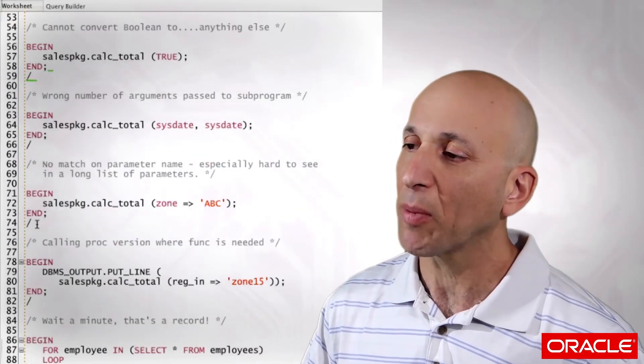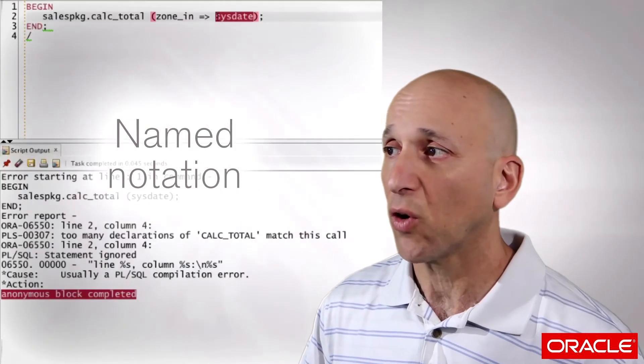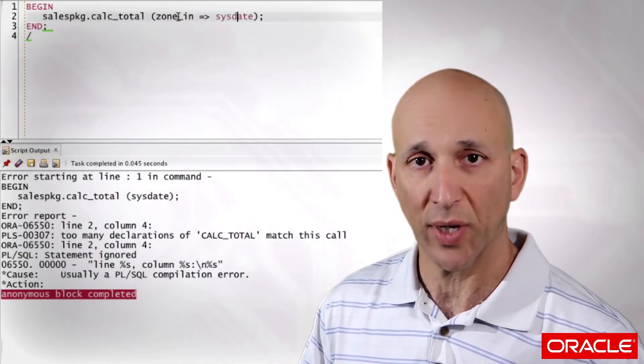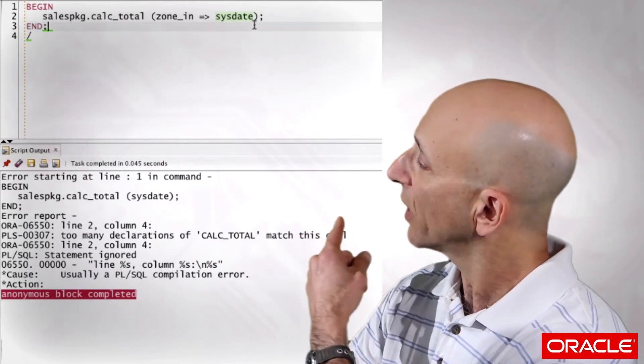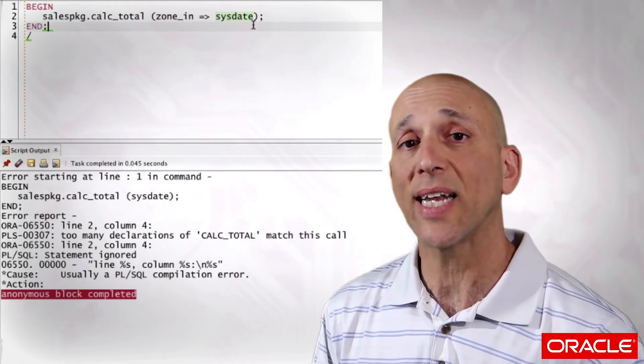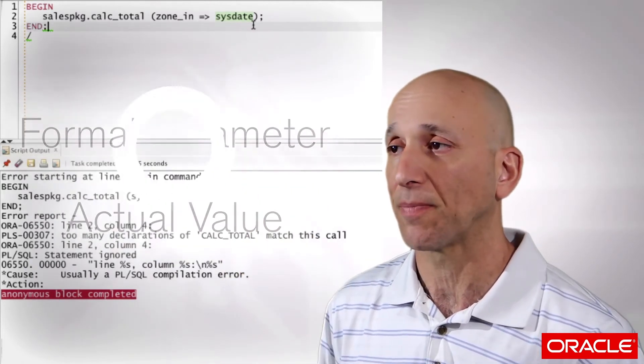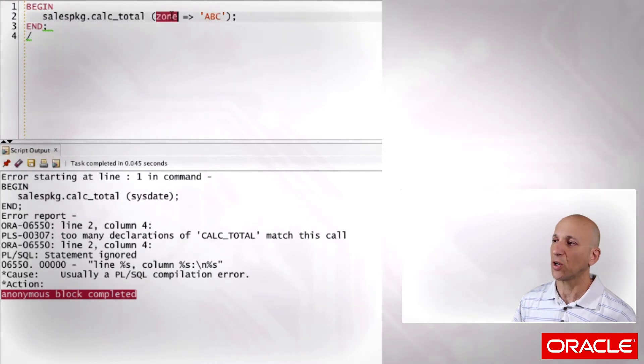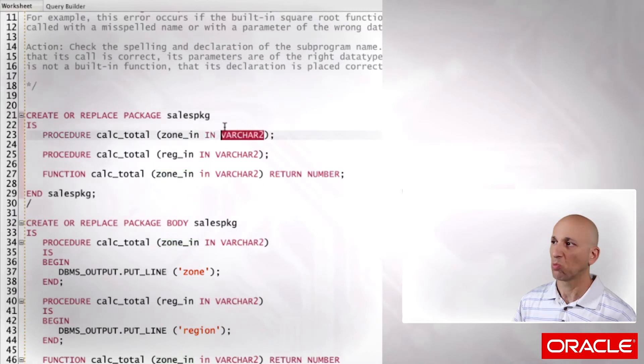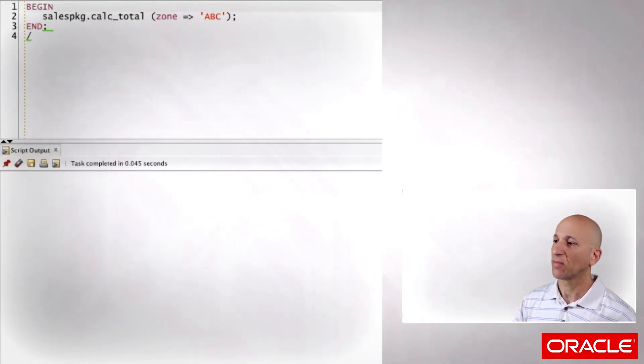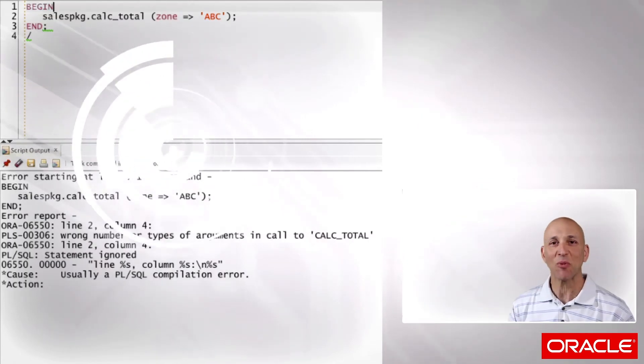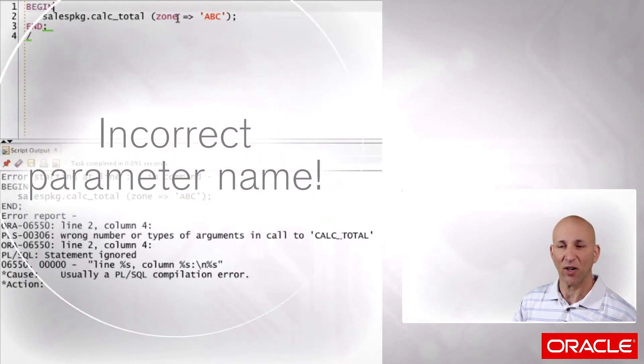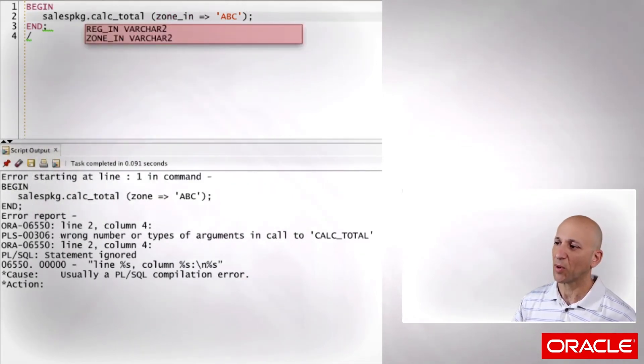Now, another problem you might run into relates to name notation. What I wrote right here is I explicitly associated this parameter, zone n, with this argument value, sys state. The equal greater than symbol is the association symbol, and it's called name notation. I'm naming which parameter goes with which argument value. And that worked. Here's another version that doesn't work so well. Pass an ABC and associate it with the zone. Because you know, at a glance, I've got zone, string, good to go. Run my code. Oh no! PLS-306, wrong number of types of arguments. What's going on? Well, again, because it's a simple program, it's pretty easy to see that my parameter name is not correct. It needs to be zoneN. And when I run it, no problem.